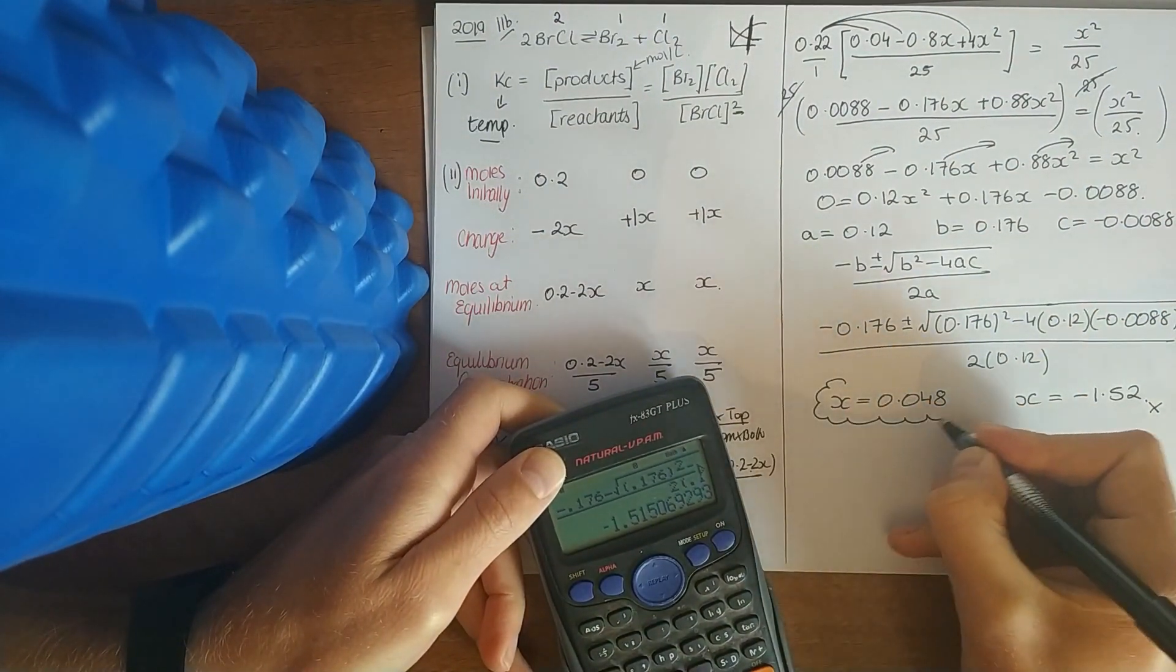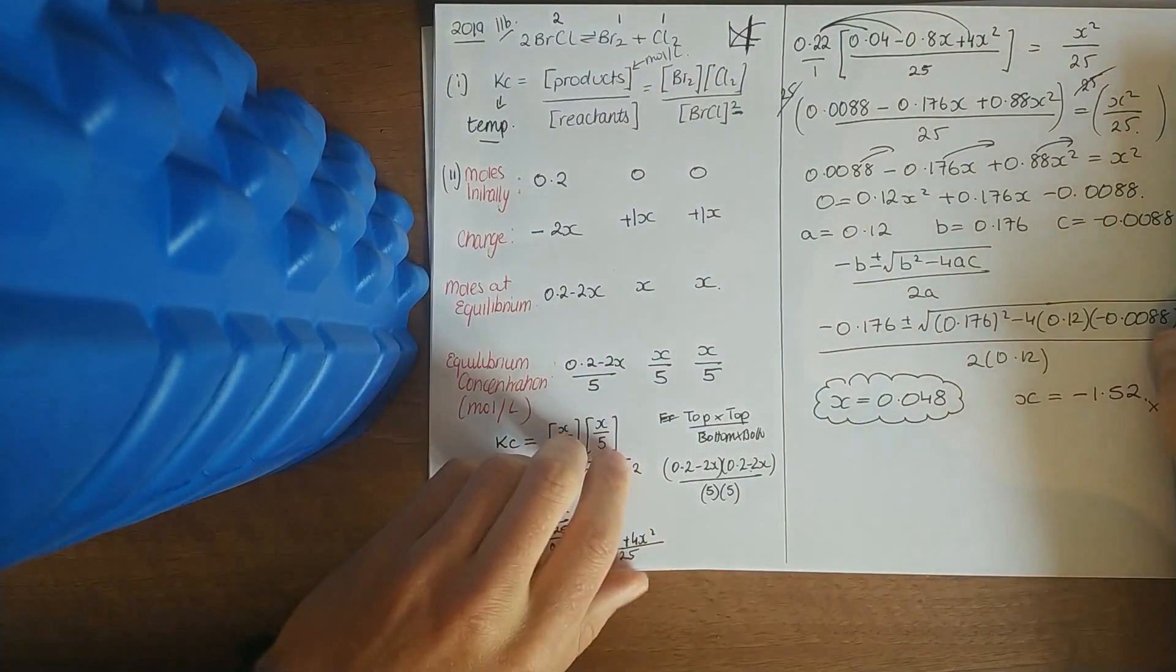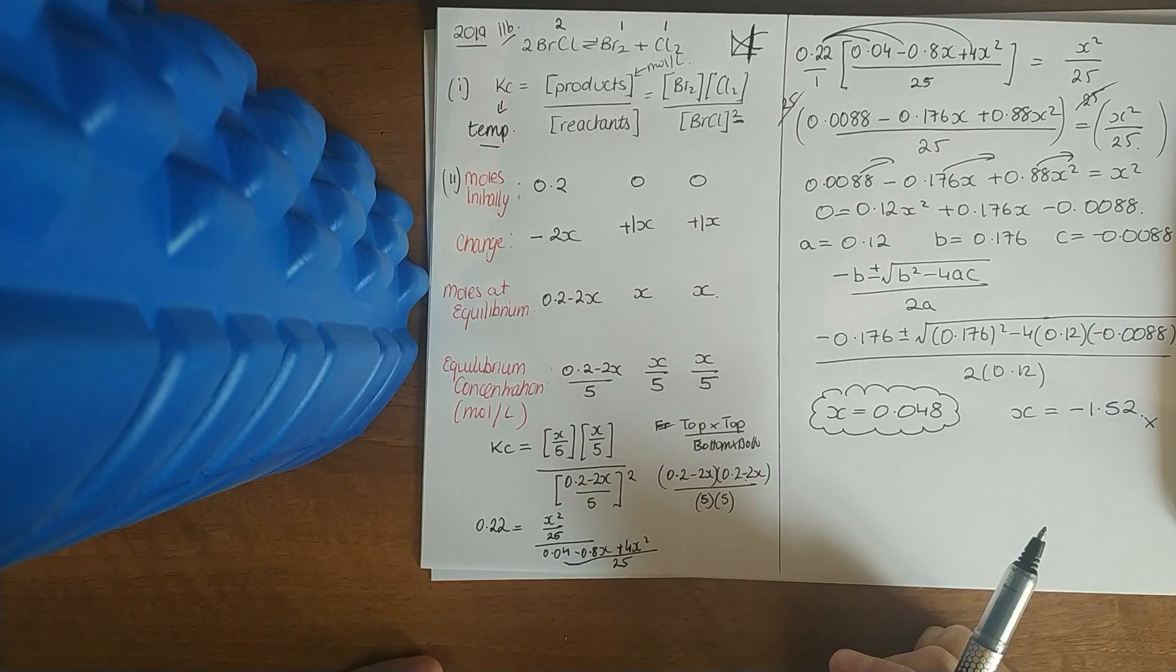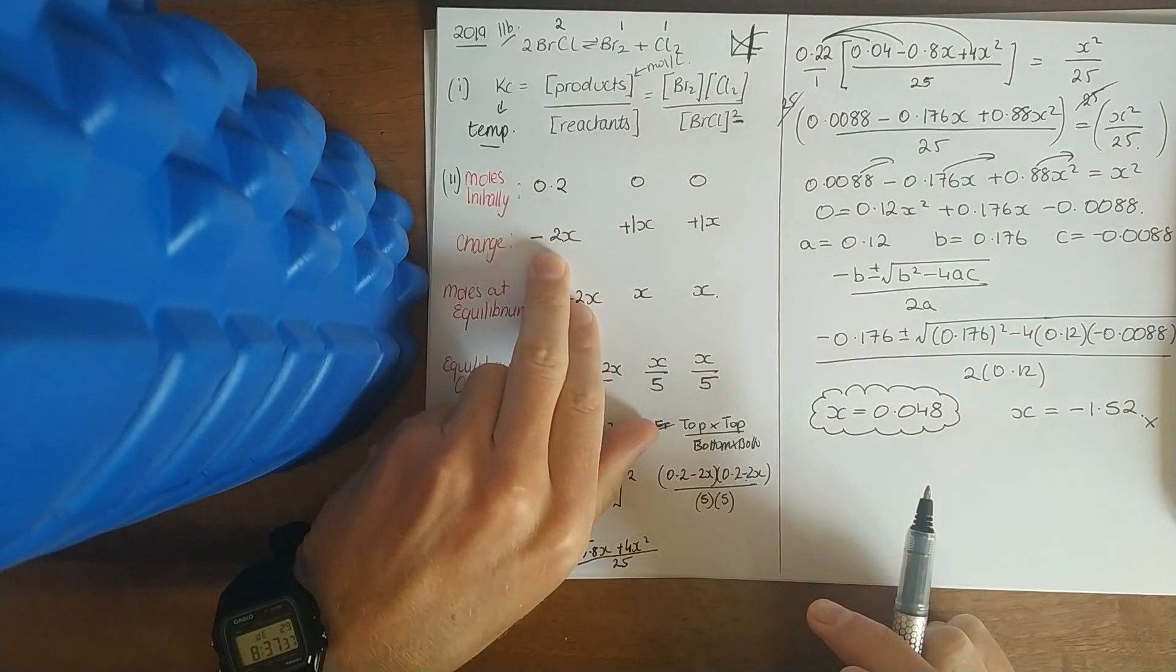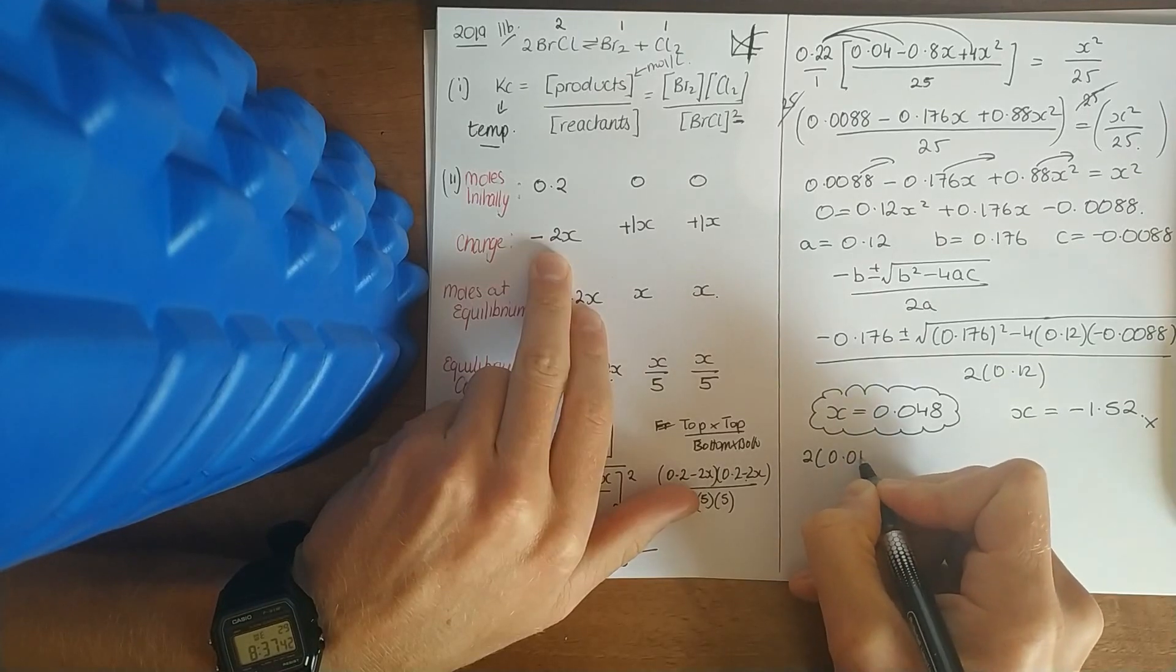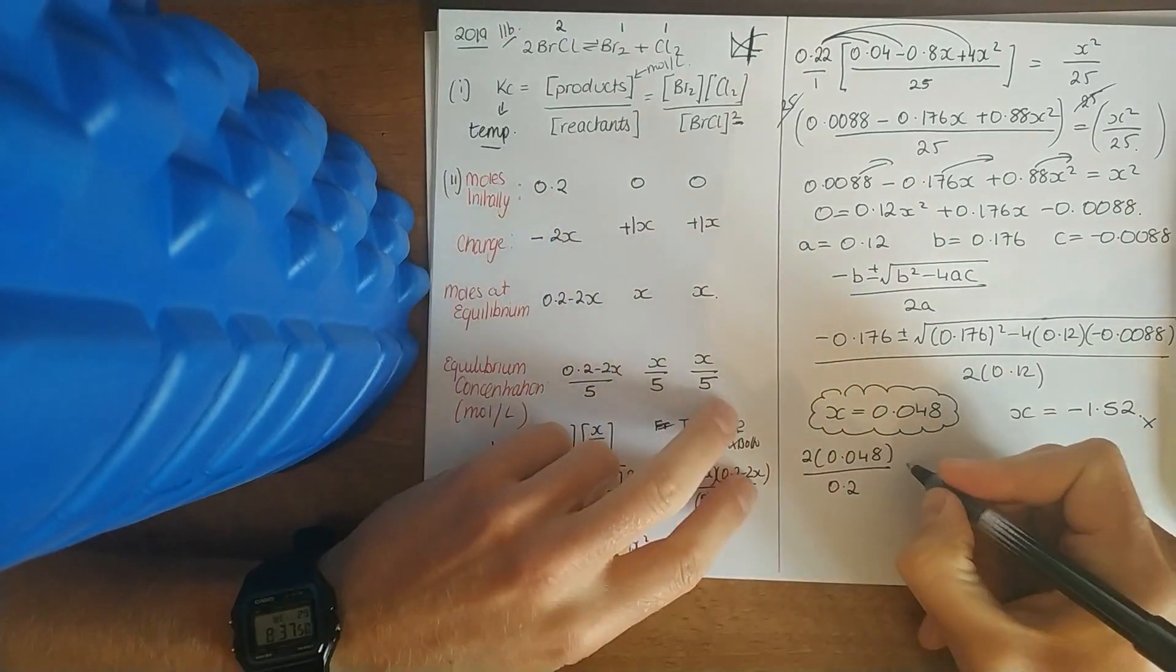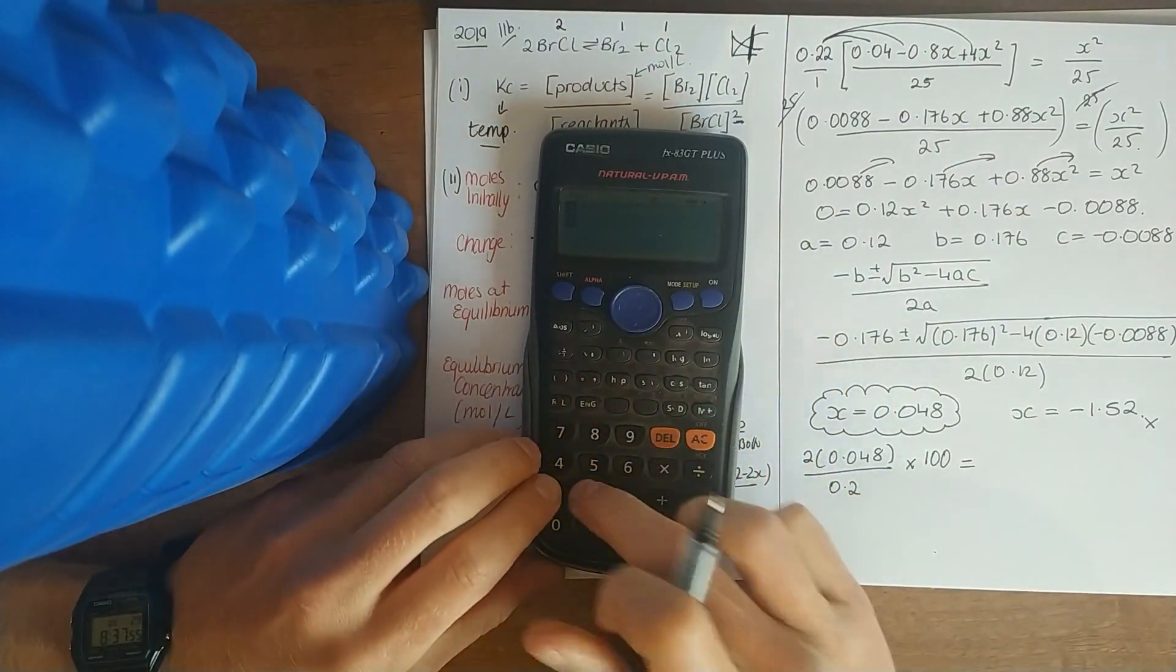Generally they might ask you for the equilibrium concentration or the moles at equilibrium. This was different. They asked for the percentage decomposition of your bromine chloride, so how much was changed. We initially had 0.2 moles and went down by this amount, so the change was 2 times 0.048 over the original amount 0.2. You could split this up into different stages. To make anything a percent, multiply it by 100.